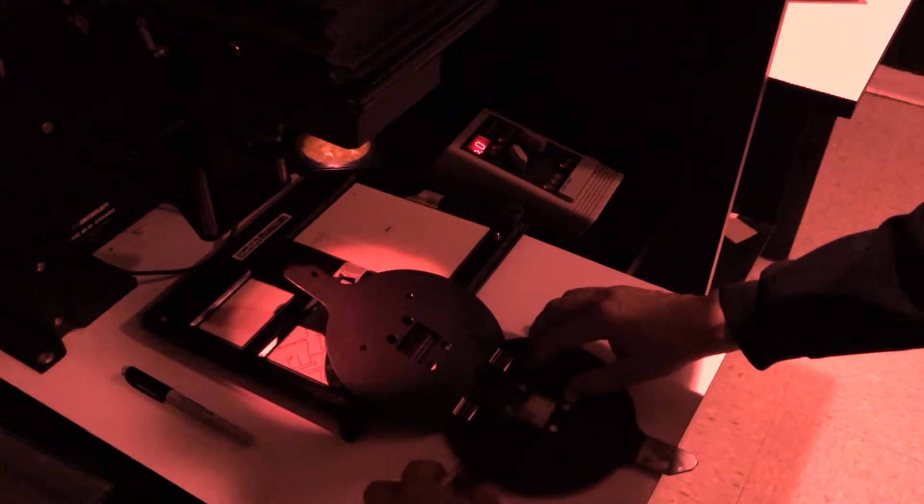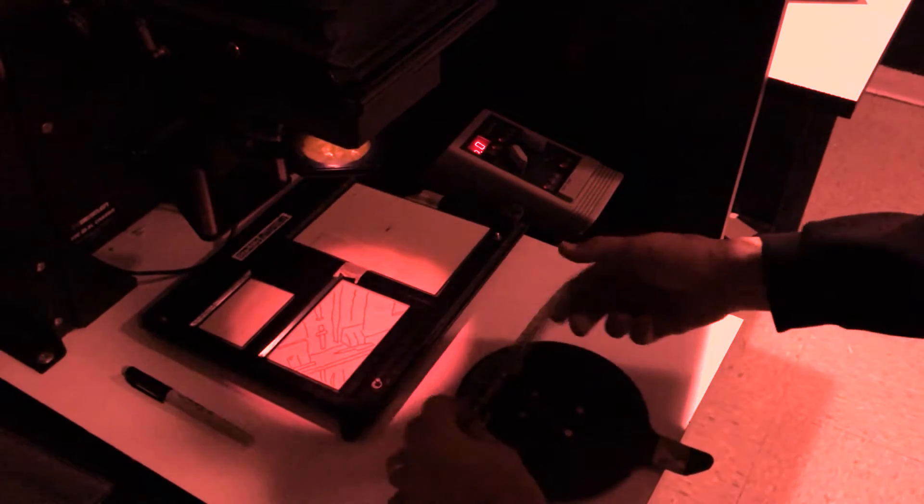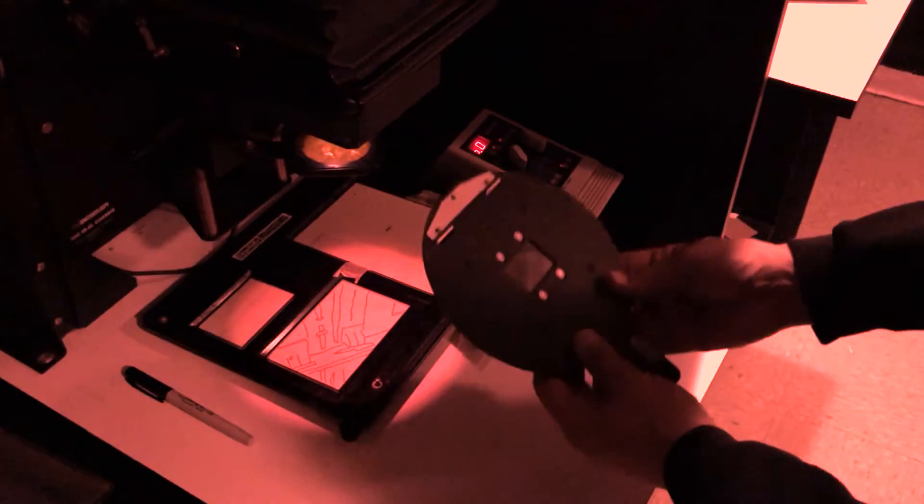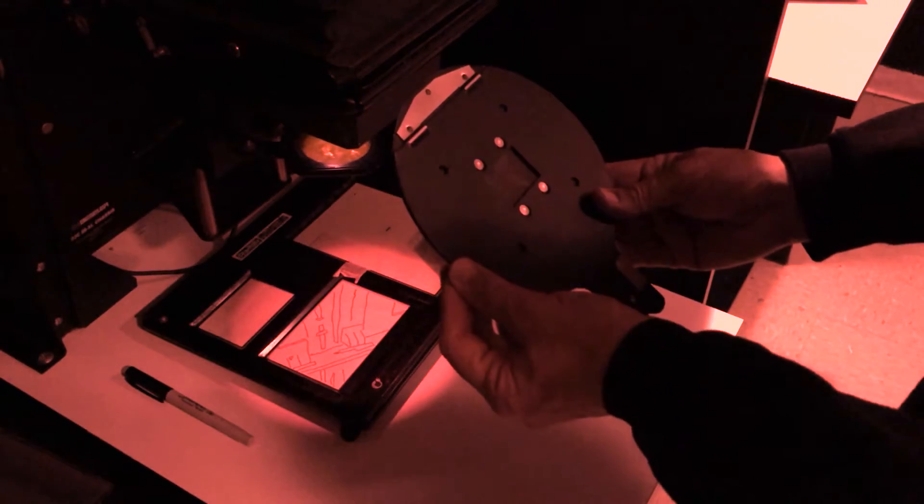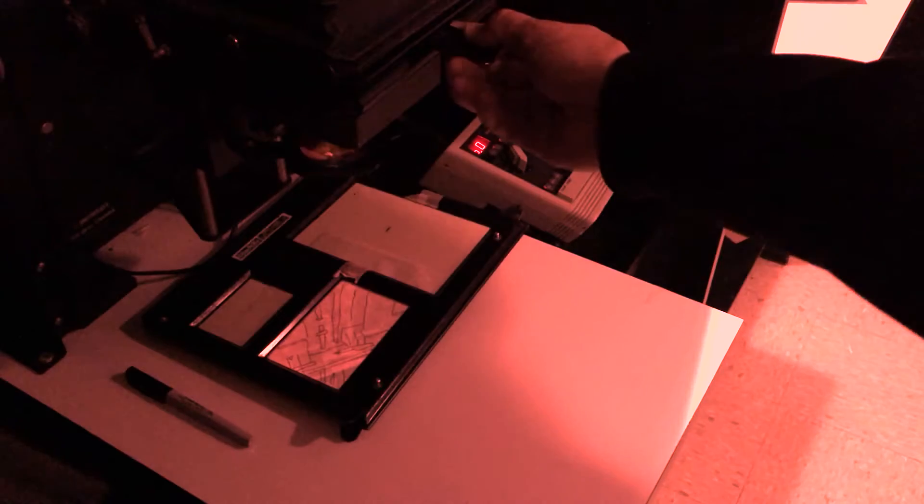All right. When you're putting it back in, it might be a little bit tricky getting the negative to lay flat, since it is upside down. But I know you can do it. Once you get it straightened out, close the negative carrier. Line things up and slip back in that toaster. Excellent work.